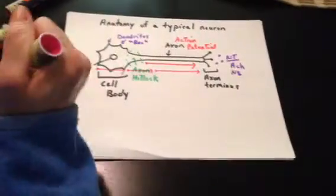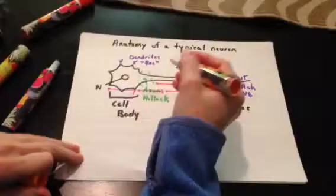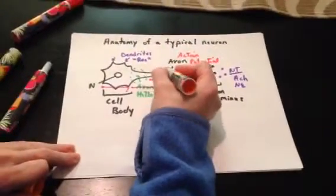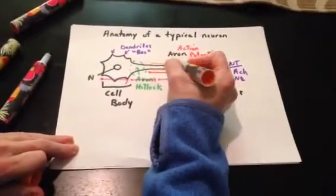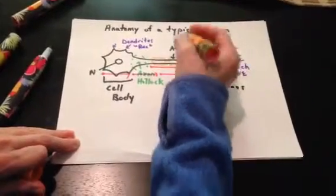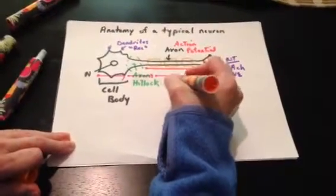A couple more things. The axon, many times our axons are myelinated. So I am illustrating Schwann cells here. These orange cells are Schwann cells.